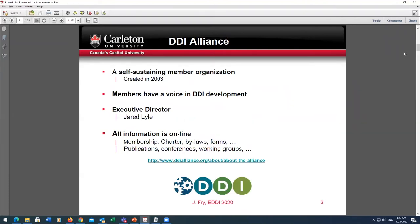The DDI Alliance is a self-sustaining member organization created in 2003. If you're planning on implementing DDI in your institution, you should look into the DDI Alliance — being part of it means being able to give input when discussing changes, edits, and new formatting. Members really do have a voice in DDI development. If interested, please contact Earl Lyle, the executive director. All information is online: membership, the charter, bylaws, forms, publications, conferences, and working groups.